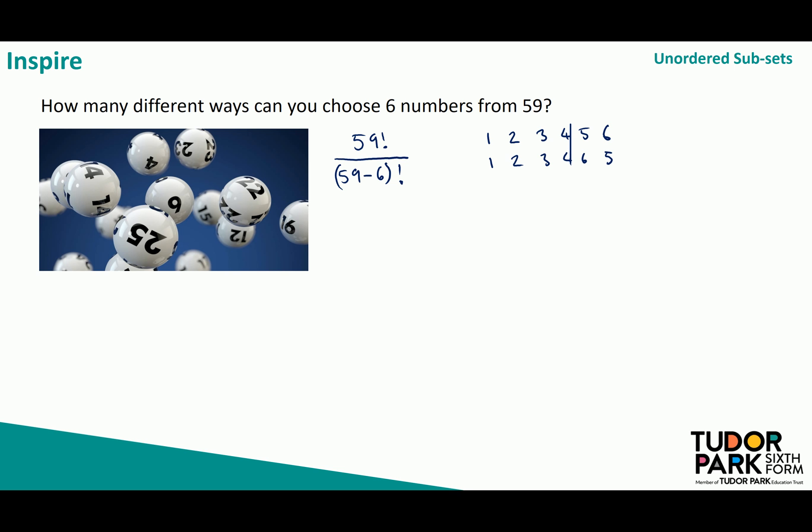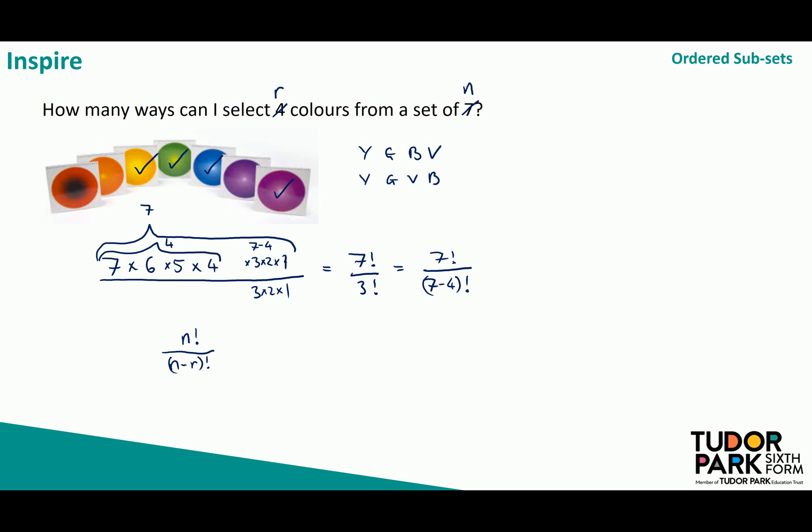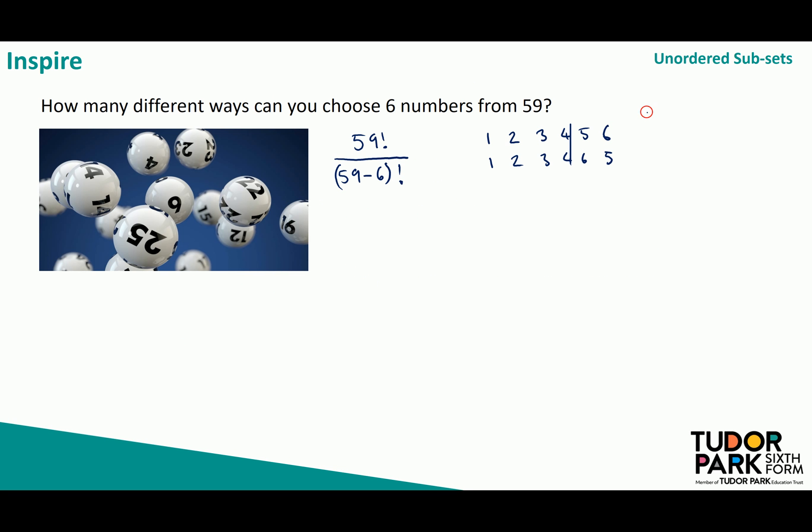Well let's think about how many different ways we can order six items. That's very similar to our bus stop problem. I can order six items in six factorial ways. So if I want to remove the different ways I can order these items I simply need to divide this value by six factorial and this becomes 59 factorial over six factorial times 59 minus six factorial.